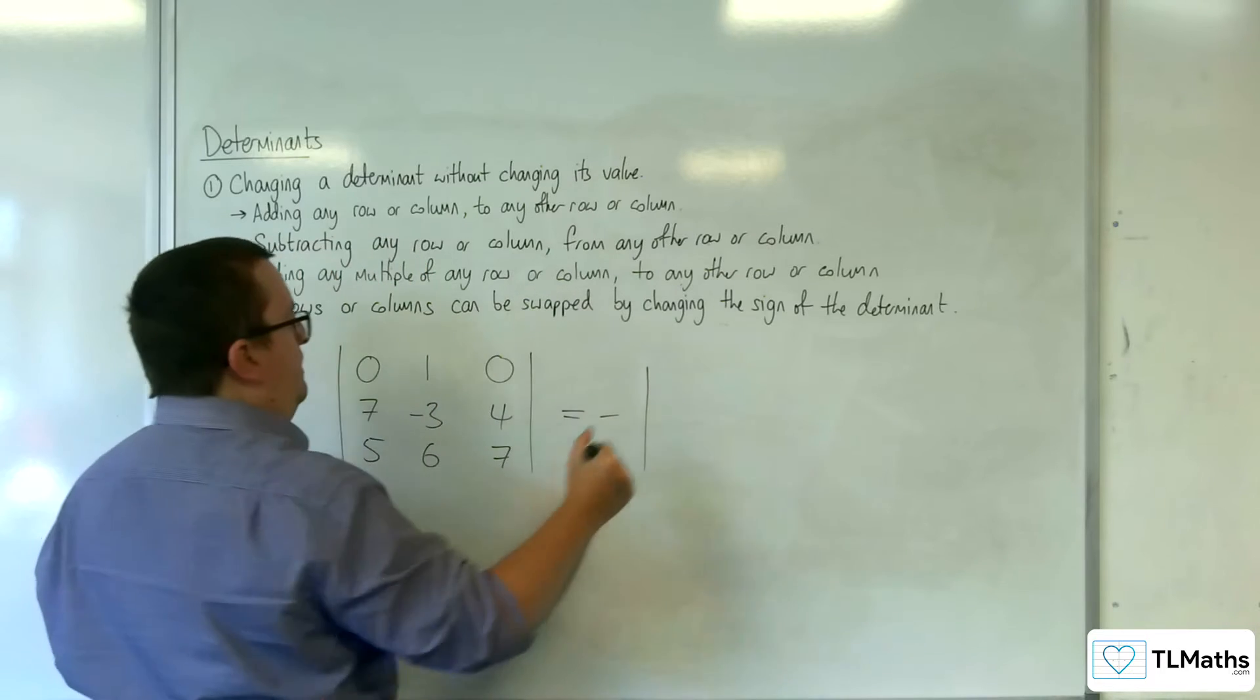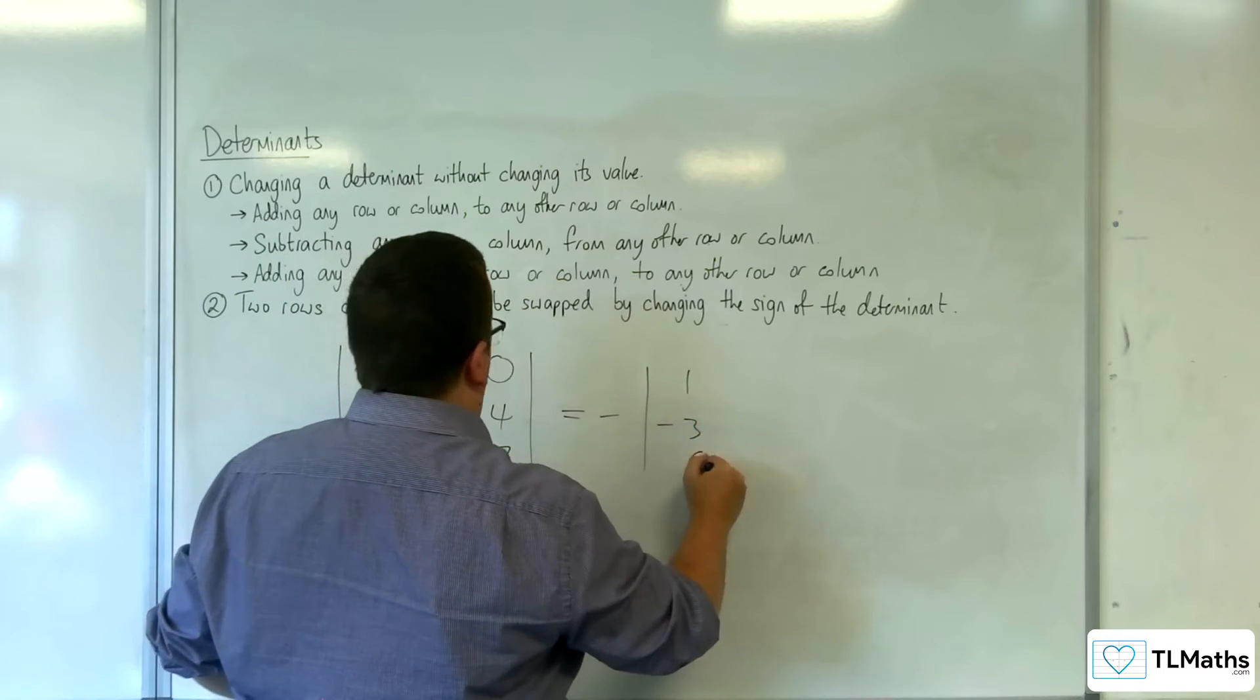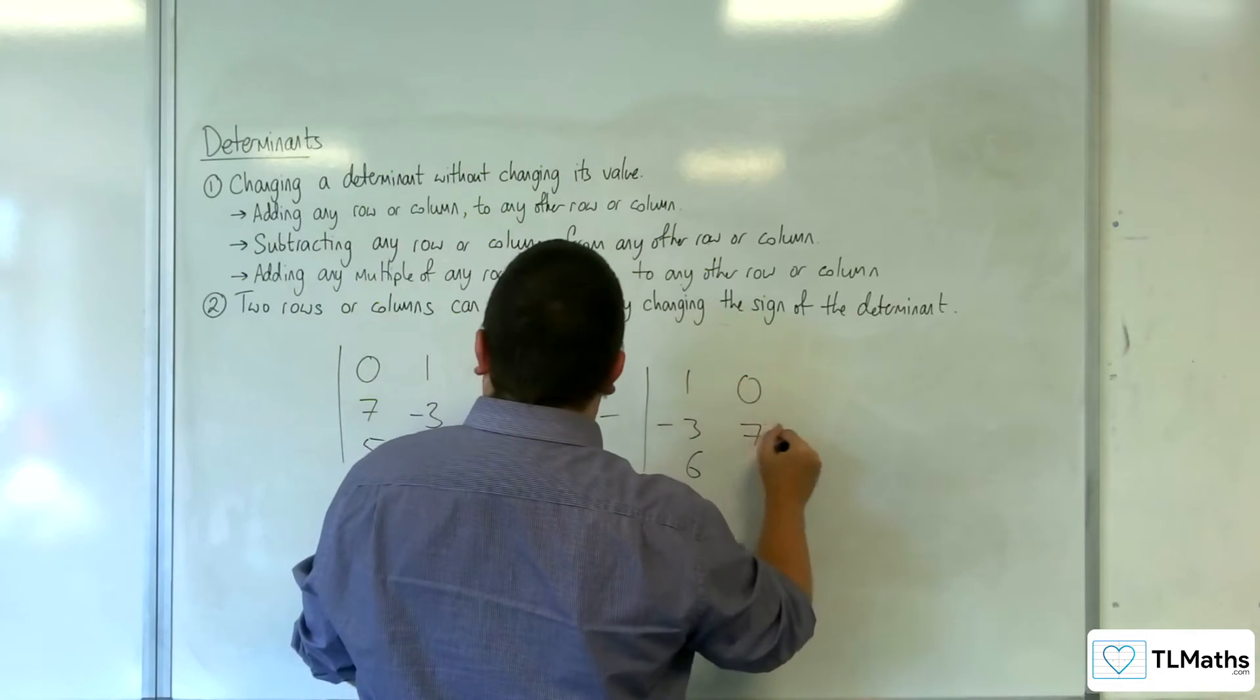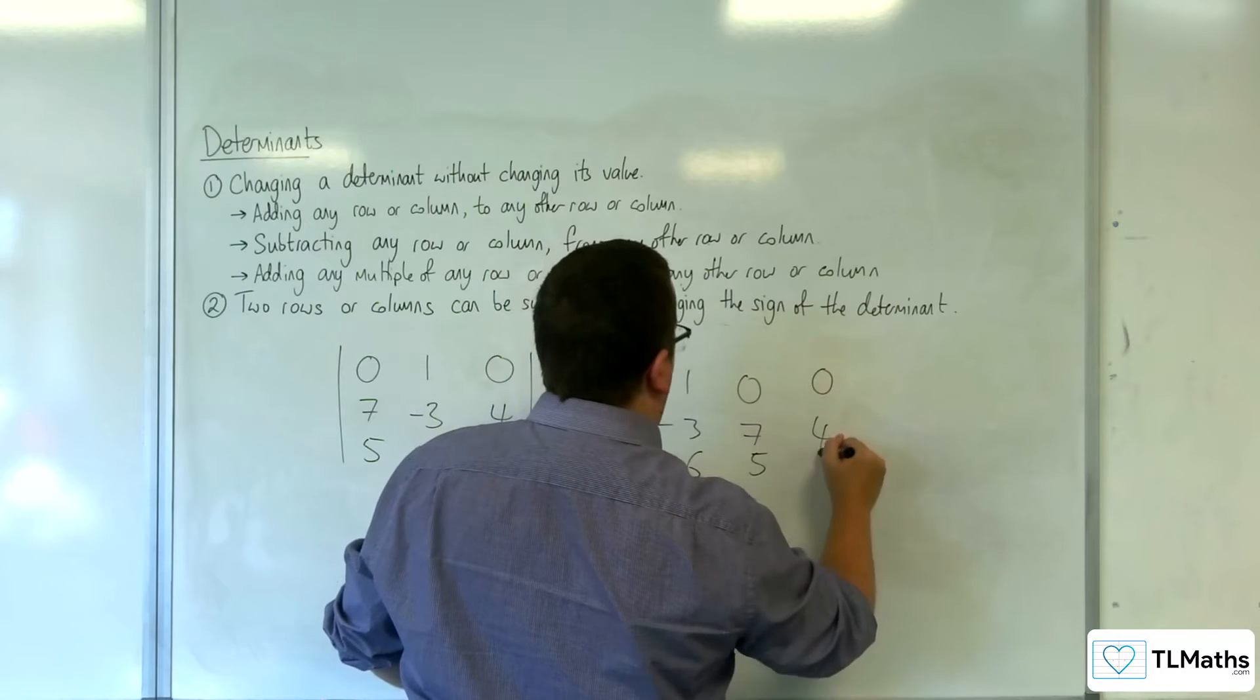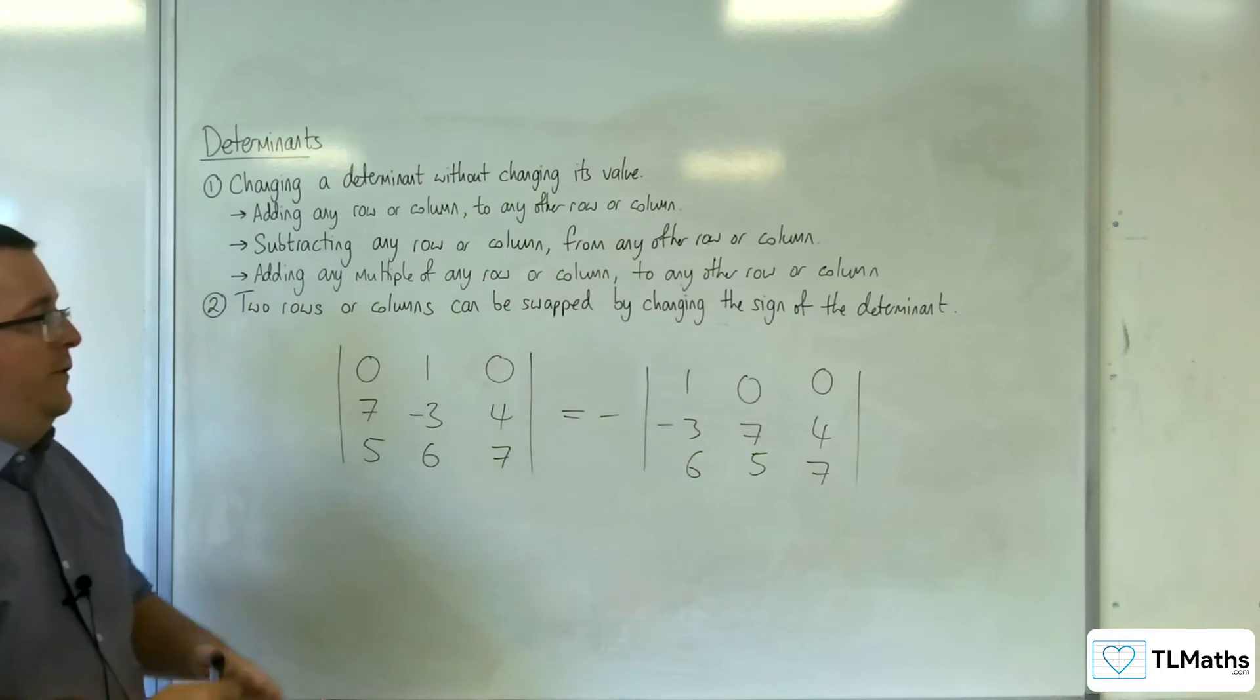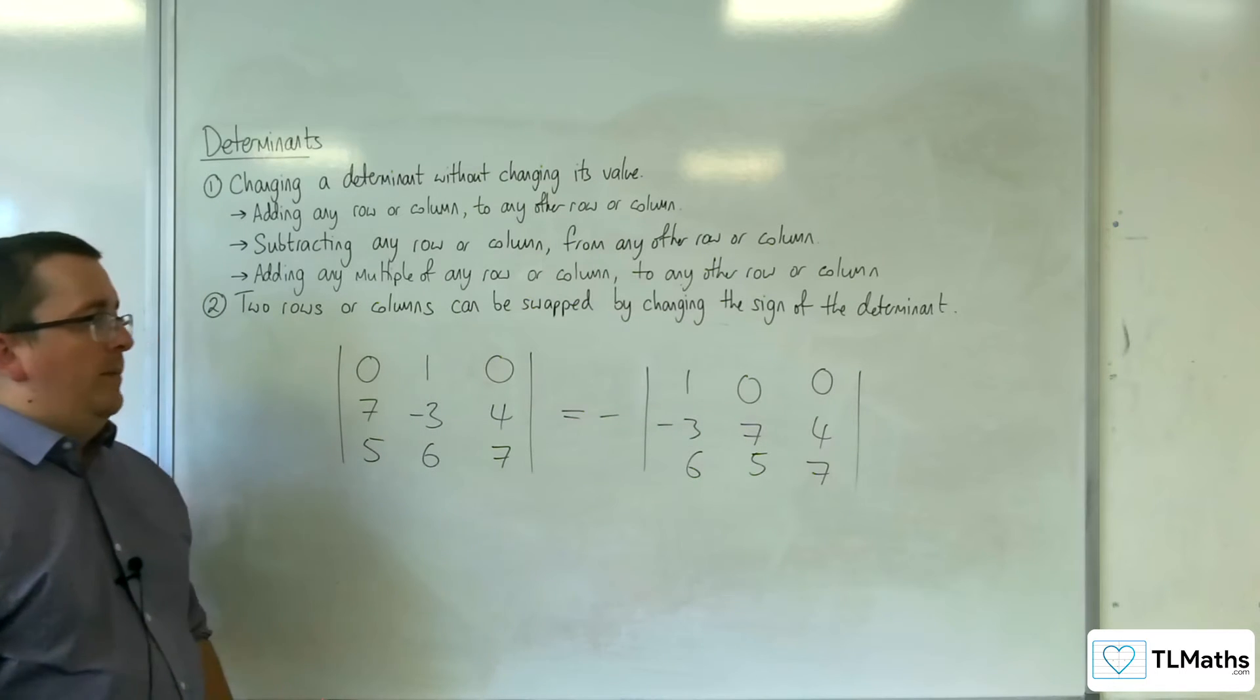But just stick a minus sign in front, and you'll have 1, minus 3, 6, 0, 7, 5, 0, 4, 7. And then you can find that determinant there.